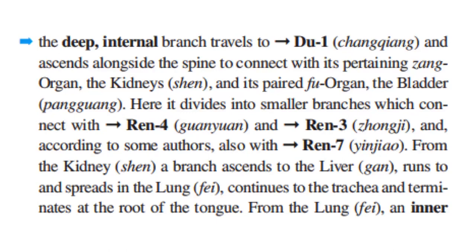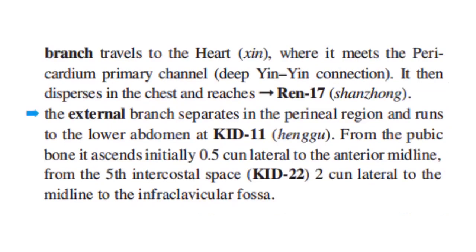From the kidney, a branch ascends to the liver, runs to and spreads in the lung, continues to the trachea, and terminates at the root of the tongue. From the lung, an inner branch travels to the heart, where it meets the pericardium primary channel, which is the deep yin-yin connection. It then disperses in the chest and reaches REN 17.